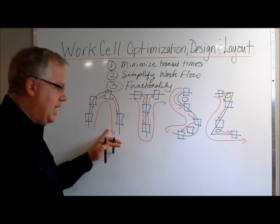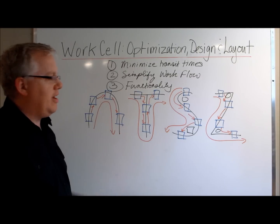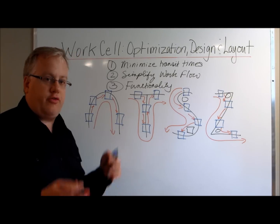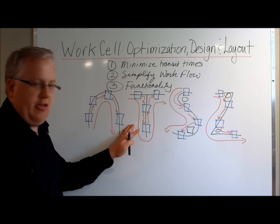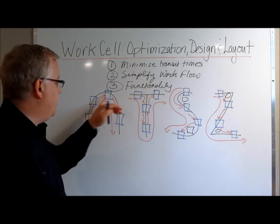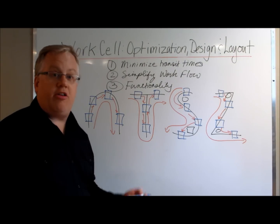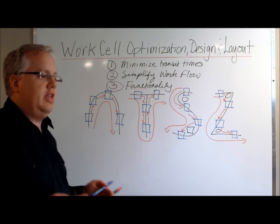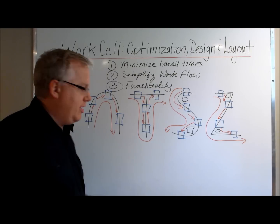You've got to minimize transit times, simplify how work flows within the work cell and from one workstation to the next, and make it functional so operators can freely move from one station to the next. Beyond layout, you also need to optimize the manufacturing productivity rates emerging from individual workstations. To do that, you've got to account for the amount of actual time being worked.